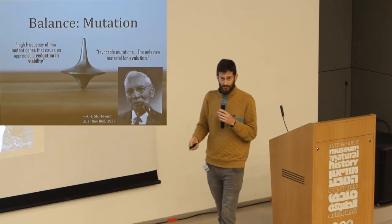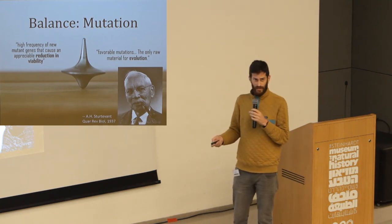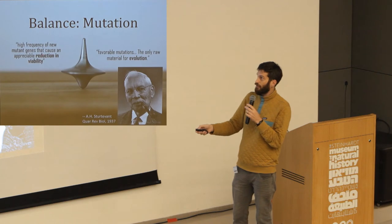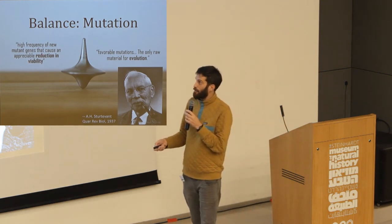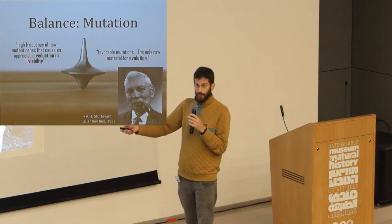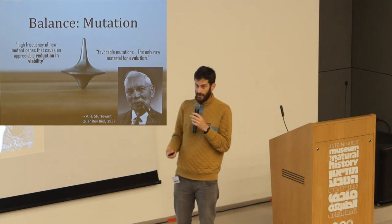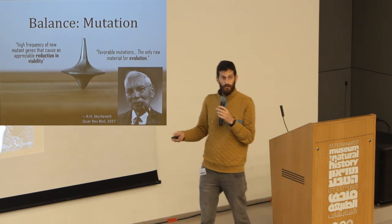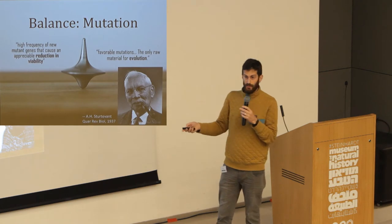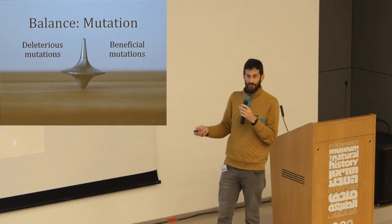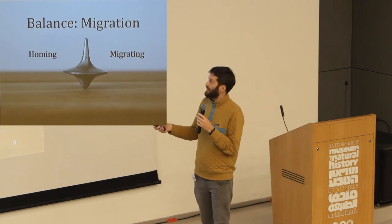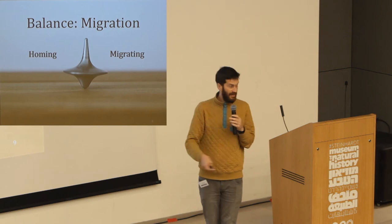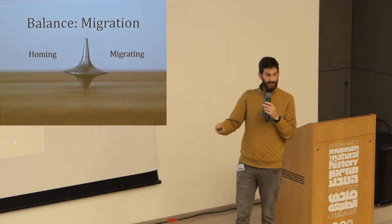There are different examples for this. A lot of my work was on the evolution of mutation. Sturtevant in 1937 talked about, on the one hand, a high frequency of new mutants that cause appreciable reduction in viability — so you don't want mutations, because most of them will do bad things. And on the other hand, he talked about favorable mutations, which are the only raw material for evolution. This is a balance between deleterious and beneficial mutations. We can think about a similar balance for migration, where some individuals will prefer homing — staying where they are — and some will go for migrating to a different site.